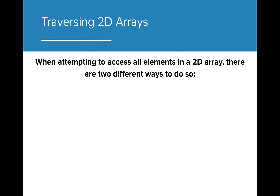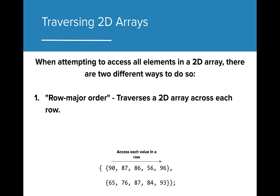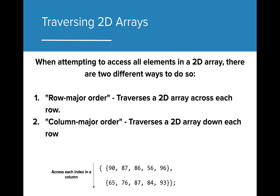When attempting to access all elements in a 2D array, we can do so in two different ways. The first way is Row Major Order. Row Major traversals traverse the 2D array by accessing each value in a row before moving to the next row. The other way is Column Major Order. Column Major searches each column down all rows before moving to the next column. In this lesson, we are going to take a deeper look into how we can traverse 2D arrays in both Column and Row Major Order.